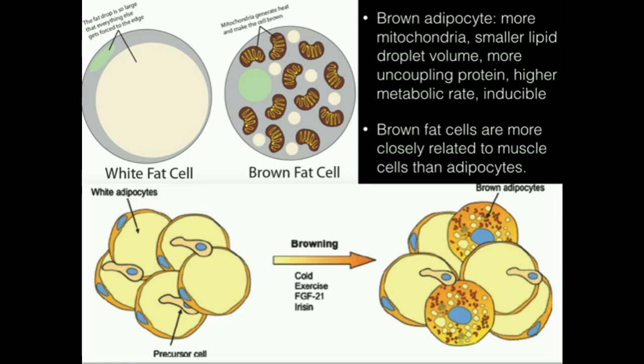They've actually shown that brown fat cells are more closely related to muscle cells than to white adipocytes. Another thing is that brown fat cells are inducible — in adults, you can actually induce the formation of brown fat cells. There are precursor cells in fat tissue that can be induced to become brown fat cells. Cold, for instance, seems to act as a negative feedback signal to make more brown fat cells so that you can produce more heat.